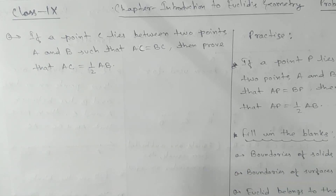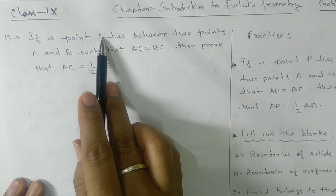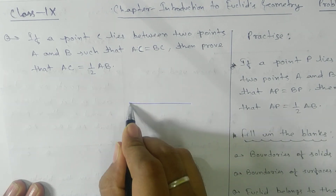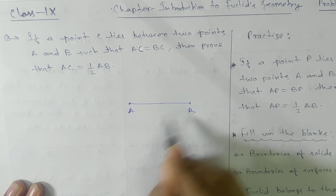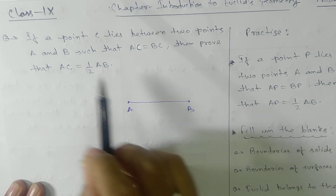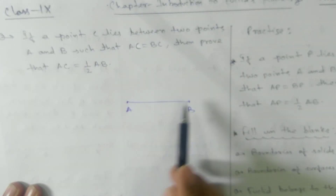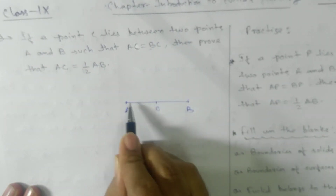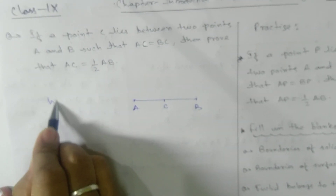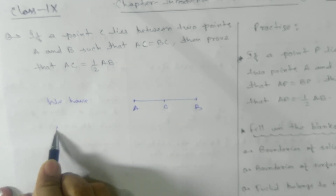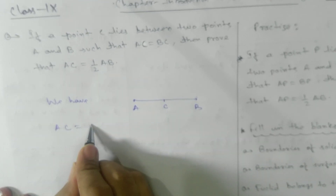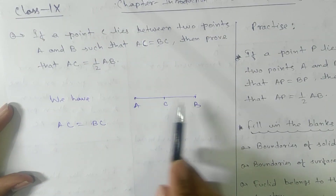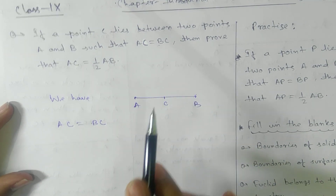Here is the next problem: if a point C lies between two points A and B, take two points A and B and join them. It is saying that C lies between A and B such that AC equals BC, which means C is the midpoint. So we have AC equals BC according to the question. We need to prove that AC equals half of AB, using Euclid axioms.